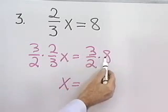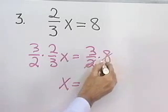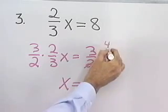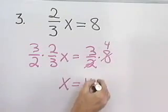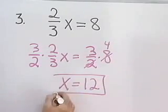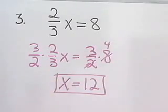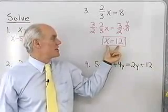And then 3 halves times 8 — I'll just divide 2 into 8, that's 4, and then 3 times 4 is 12. So, a simple little problem with fractions, and I end up with x is equal to 12.